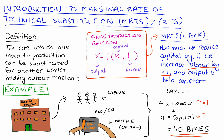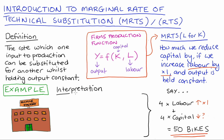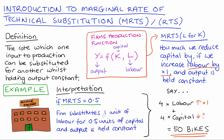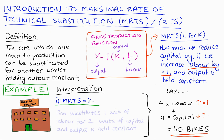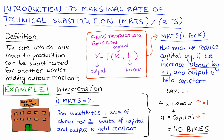In terms of interpreting the figures we might get back: if our MRTS was 0.5, this means the firm can substitute one unit of labour for 0.5 units of capital — half a unit of capital — and that substitution would hold output constant. If our MRTS was 2, this means the firm can substitute one unit of labour for two units of capital, and that substitution would hold output constant.